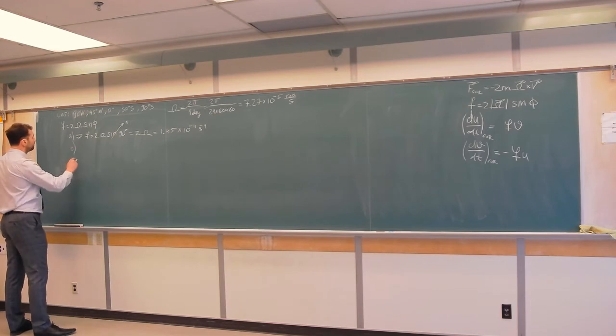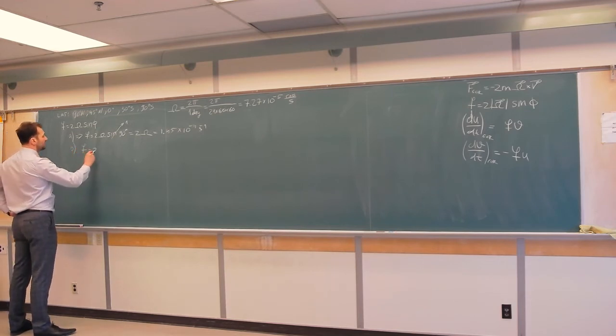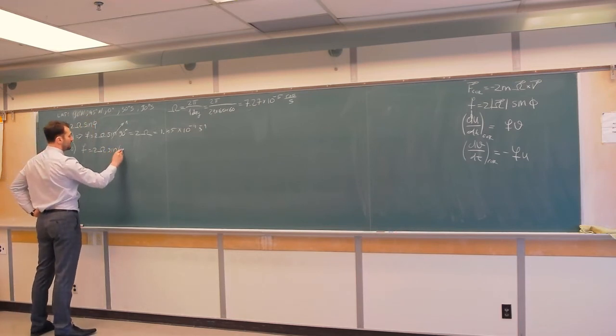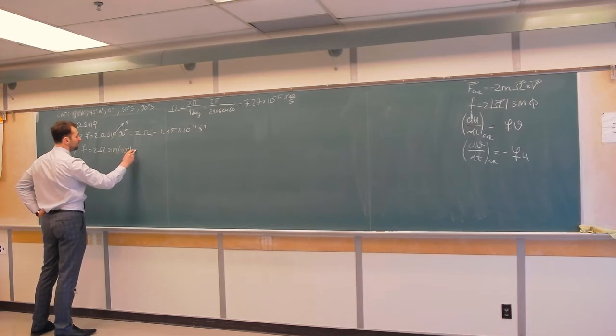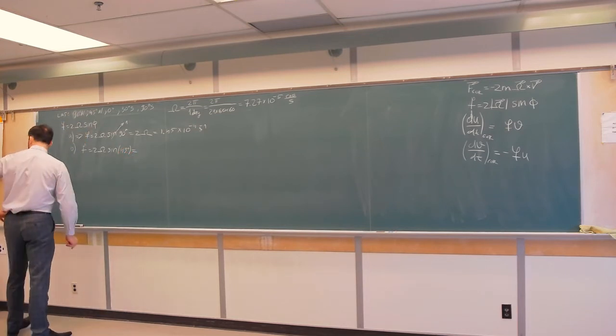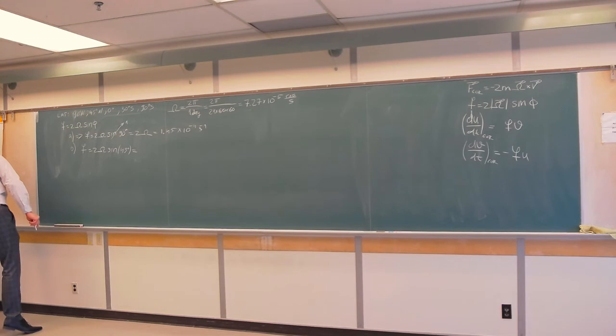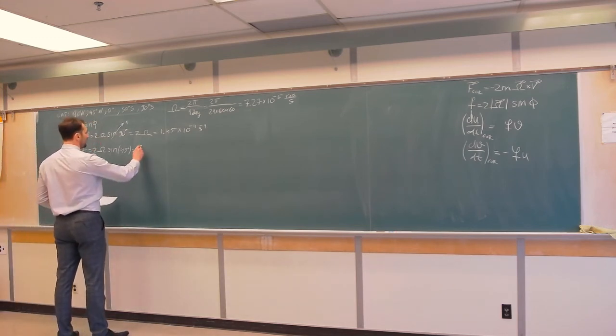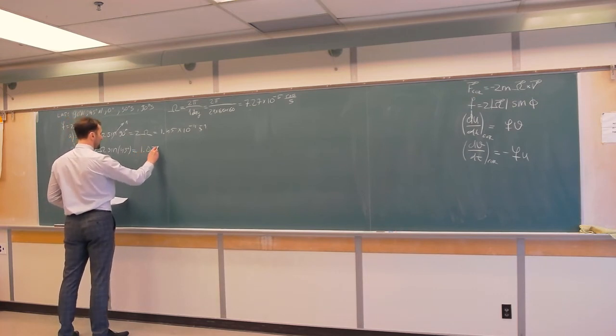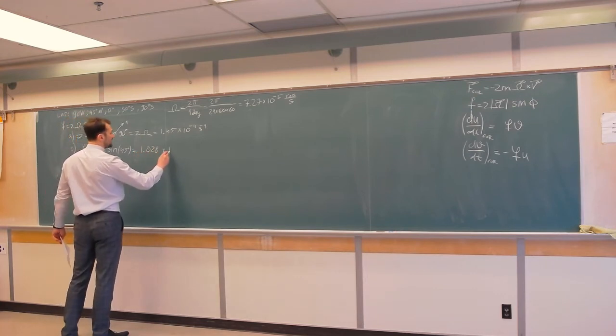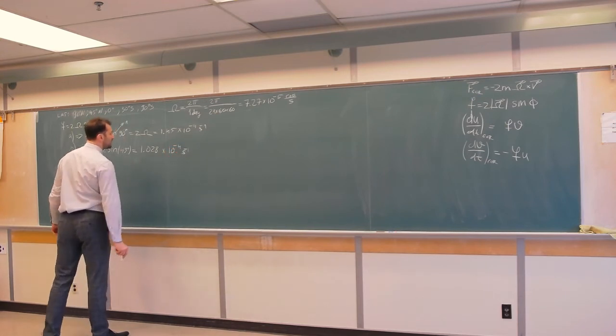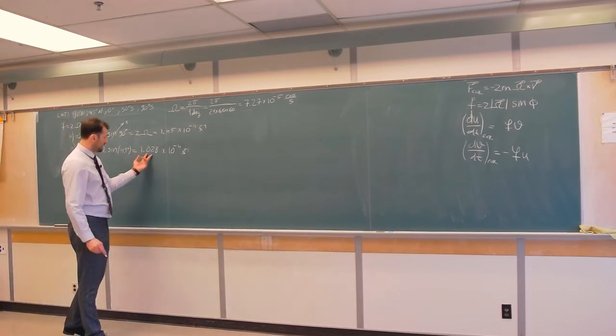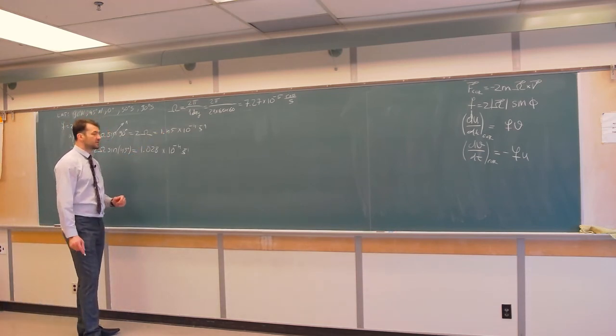Which means 45, 0, 30 degrees south will all have smaller value of F. So, let's calculate B. F is equal 2 omega sin in B, it's 45 degrees. And if you calculate that, I calculated it here. I am not going to use a calculator this time. It's 1.028 times 10 to power negative 4 second minus 1. So, you can see clearly that Coriolis parameter here is weaker than in this case over here.